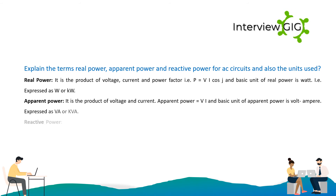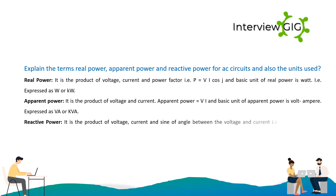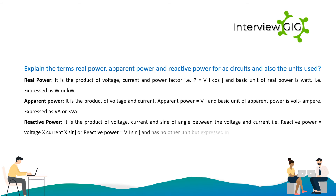Apparent power is the product of voltage and current: Apparent Power = VI, and its basic unit is Volt-Ampere, expressed as VA or kVA. Reactive power is the product of voltage, current and the sine of the angle between voltage and current: Reactive Power = VI·sinθ, expressed in VAR or kVAR.